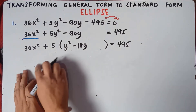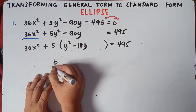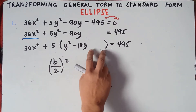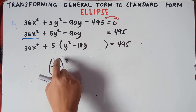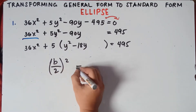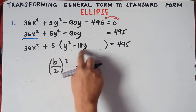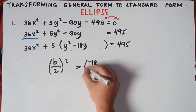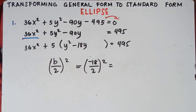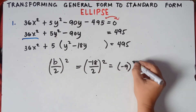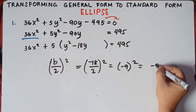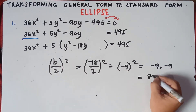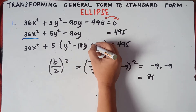Next, we do completing the square using the formula: b divided by 2, quantity squared. Our b is the coefficient beside the linear term y, which is negative 18. So negative 18 divided by 2 is negative 9, squared. Negative 9 times negative 9 equals positive 81. So the value we add is positive 81.